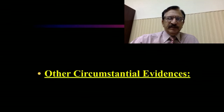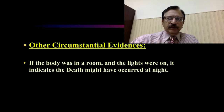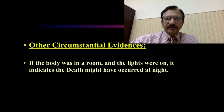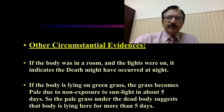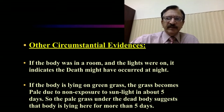Other circumstantial evidences: if the body was in a room and the lights were on, it indicates that the death might have occurred at night. If the body was lying on green grass and the grass becomes pale due to non-exposure of sunlight on the area where the body is lying, this usually occurs in about 5 days. So pale grass under the dead body suggests that the body has been lying there for more than 5 days, helping us in determining time since death.